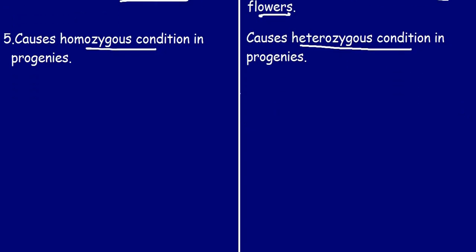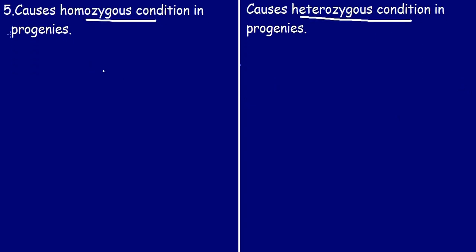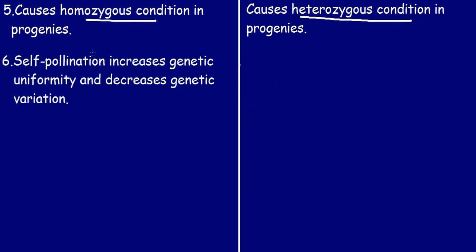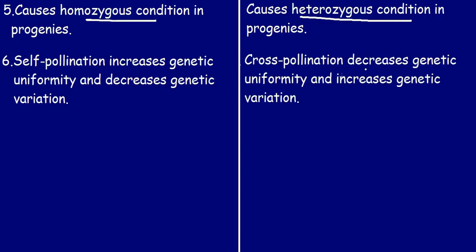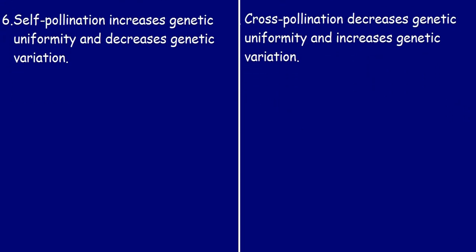The sixth point: self-pollination increases genetic uniformity and decreases genetic variation. Cross-pollination decreases genetic uniformity and increases genetic variation.